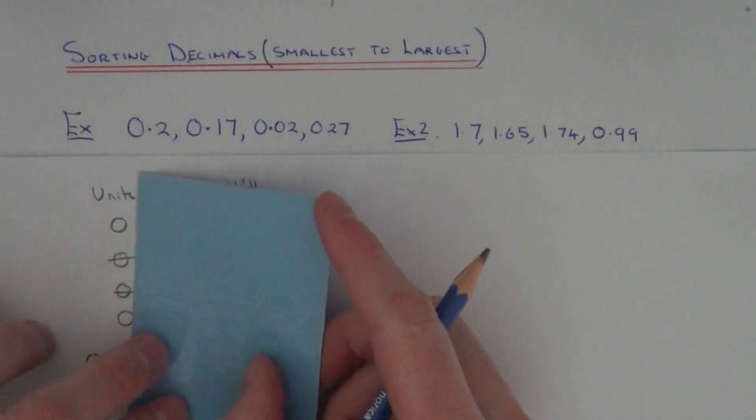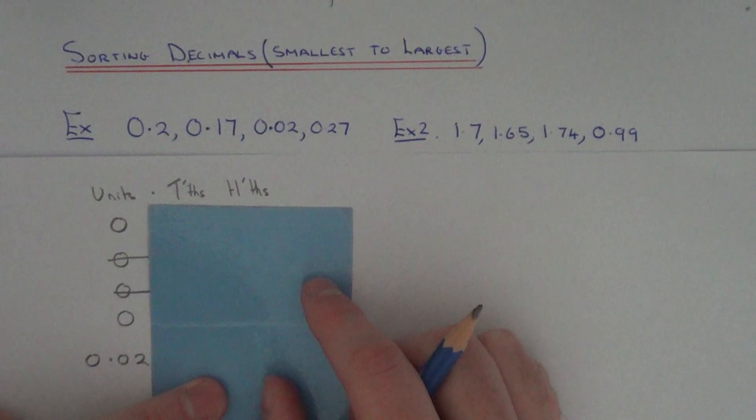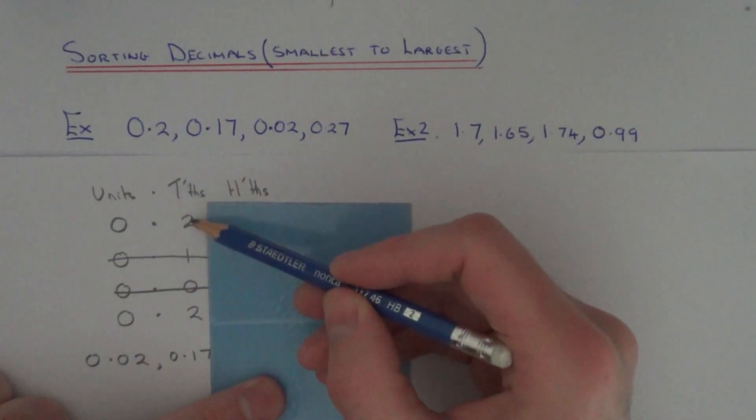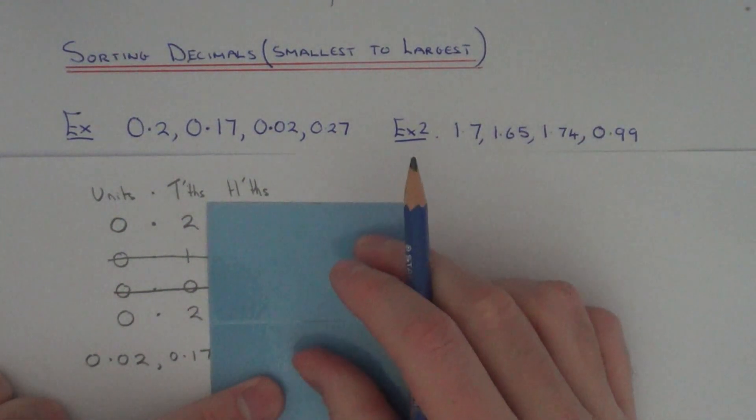So finally we've got two decimals left now. So again start on the left hand side, we can't decide in that column. Move to the tenths column. So again we've got 2s in both columns, so again we can't decide which one is the smallest.